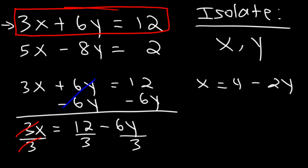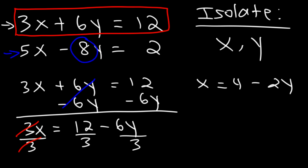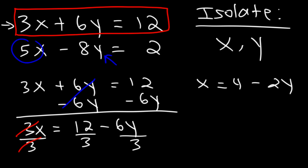That's why I wanted to start with this equation — dividing 12 and 6 by 3 gives whole numbers. If we had started with the second equation and solved for x, dividing 8 by 5 gives a fraction, and dividing 2 by 5 is also a fraction. Likewise, solving for y would give 5 over negative 8 — also a fraction. Sometimes you have no choice but to deal with fractions, and we'll cross that bridge when we get there.